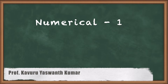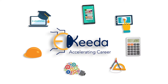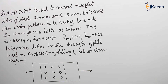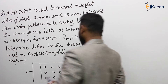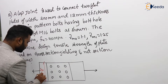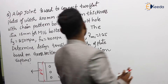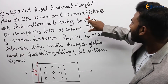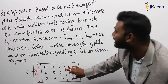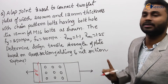A lap joint is used to connect two flat plates of width 200 mm. The flat plate has a width of 200 mm and a thickness of 12 mm. These two plates are connected using a lap joint, and the pattern of bolting is chain pattern.